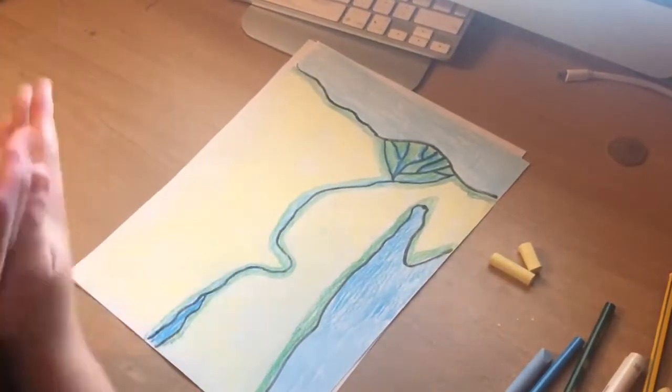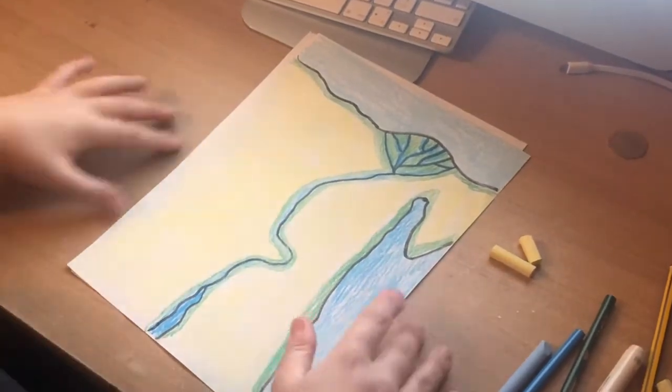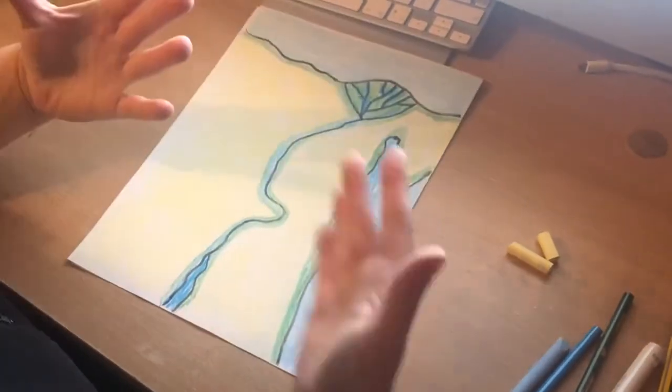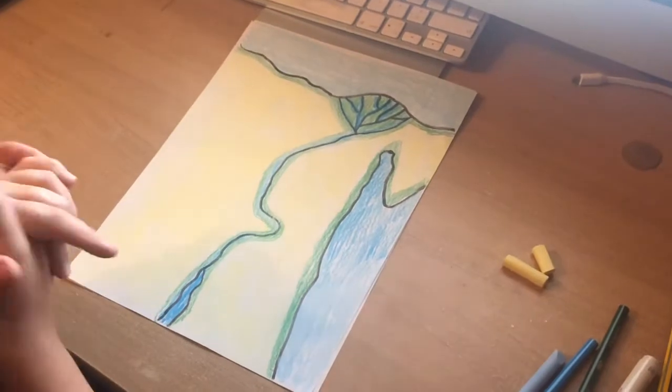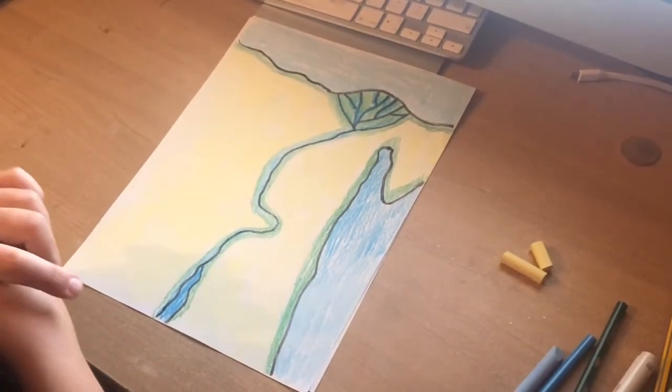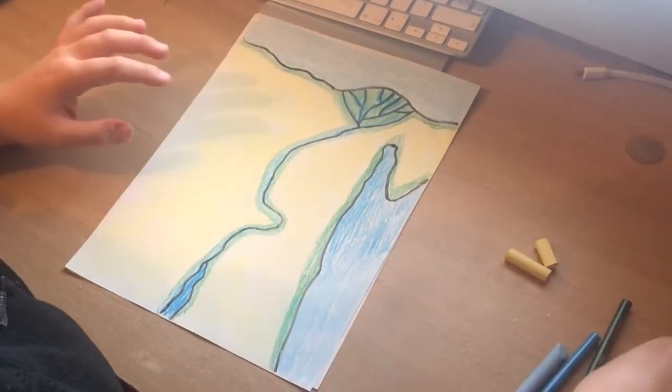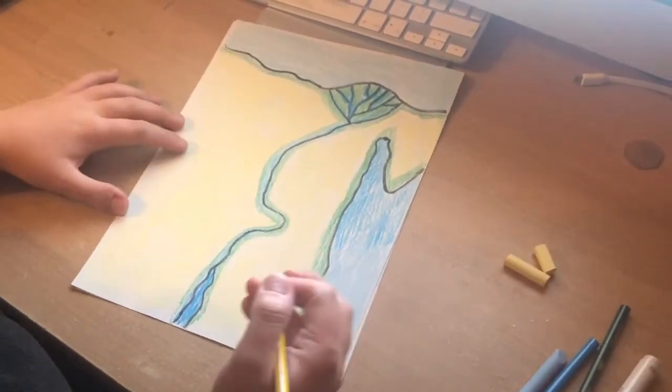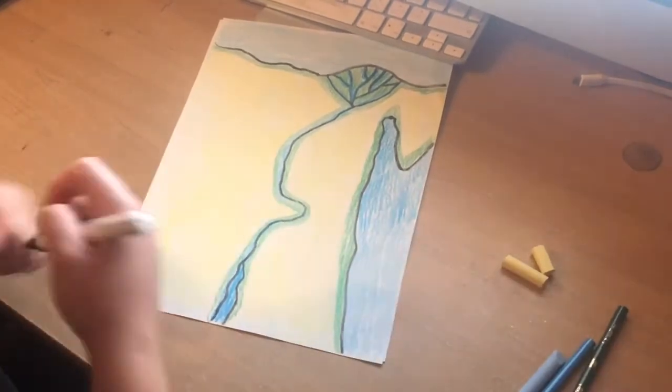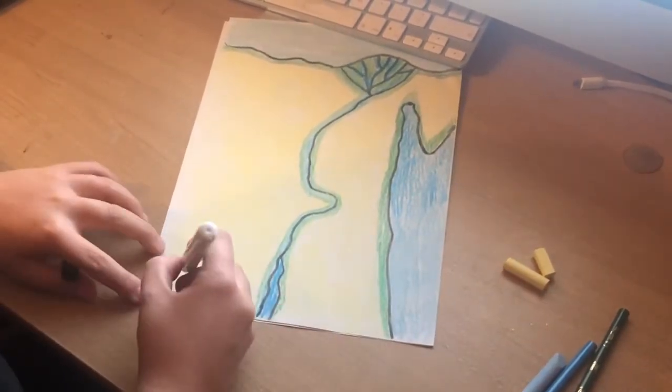Okay, so we have now colored in the basis of our map, so there are two final things that we need to do. So first of all we're going to add some labels to our map to show anybody that picks our map up exactly what we have sketched. So first of all I'm going to use my black pen, I'm going to label the bottom left.